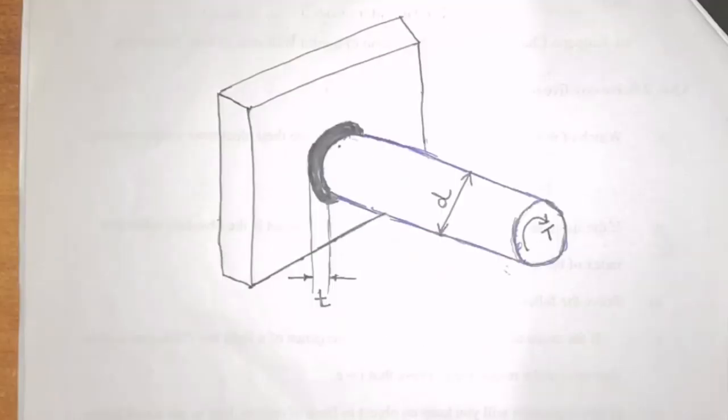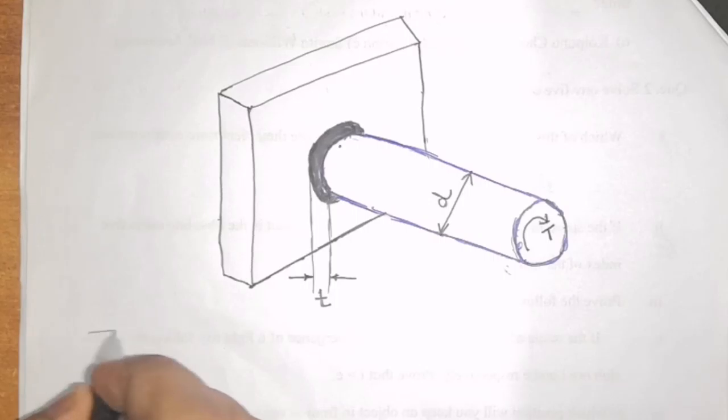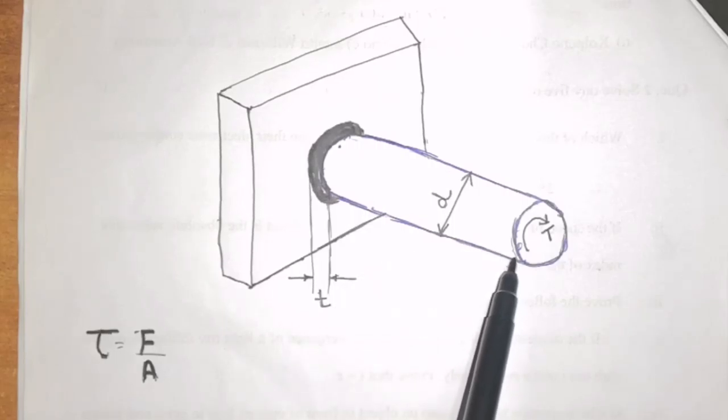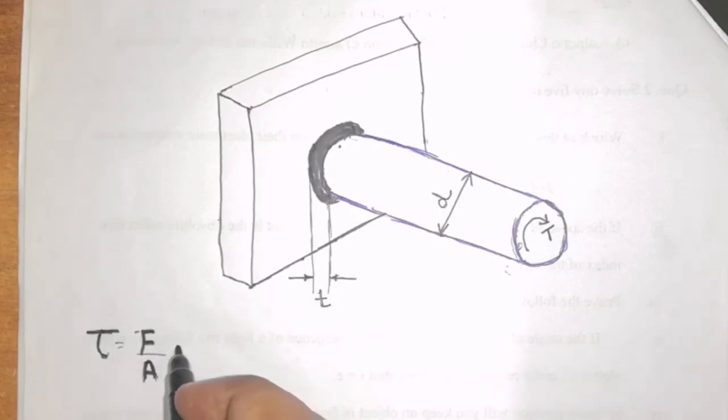Now, let us derive the relation of the shear stress induced on this weld. From basic relation, shear stress is equal to force upon area. But in this, we are not given the force, we are given torque. So, let us now convert this force in terms of torque. We also know that force is equal to torque divided by radius or we can say torque is equal to force multiplied by radius.